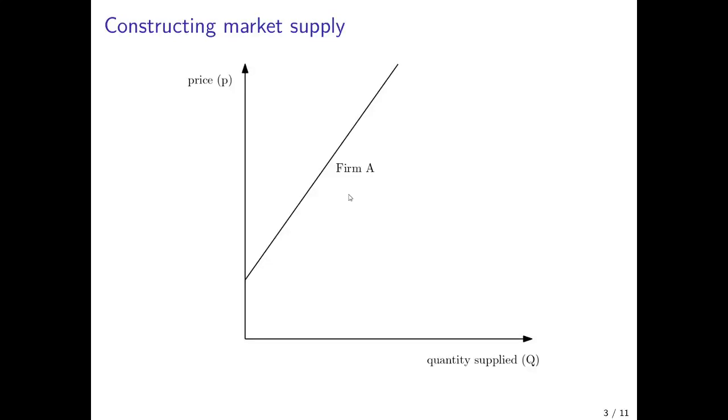This is now again analogous to the construction of the market demand curve for the demand functions. And here we depict the supply curve of firm A. That's the same supply curve we had in the previous chapter. The price is on the vertical axis and the quantity supplied on the horizontal axis. Now we again use an uppercase Q here. And firm A has an upward sloping supply curve.